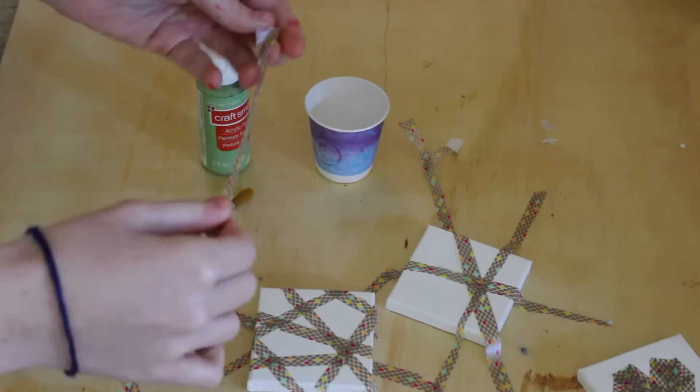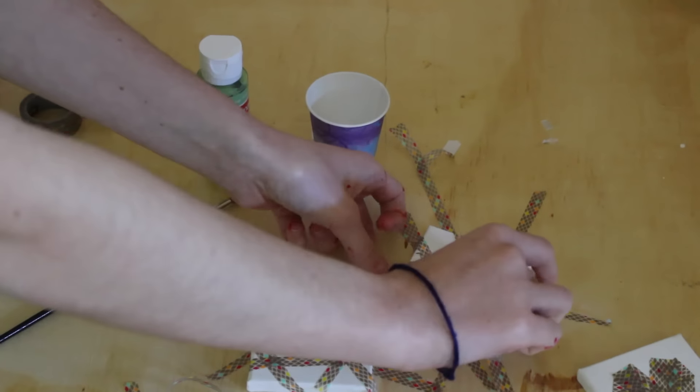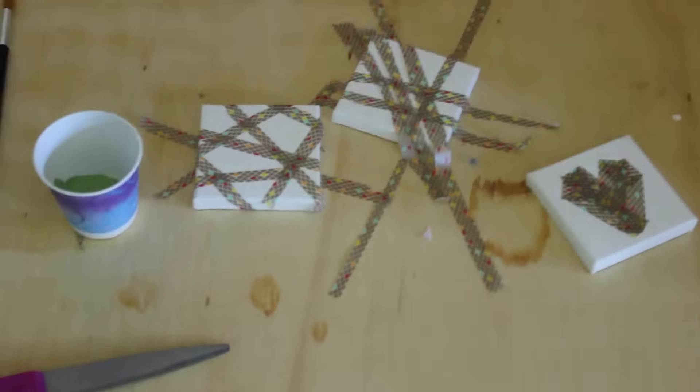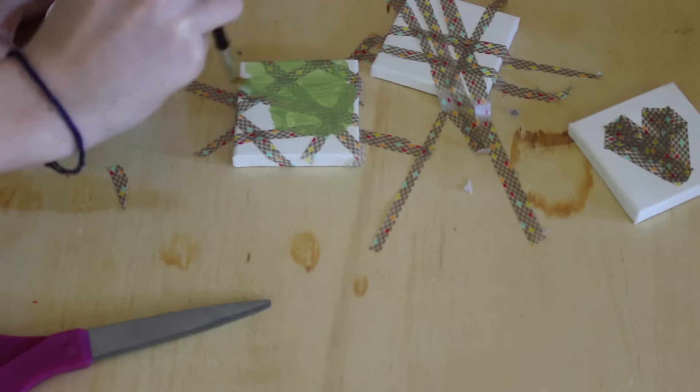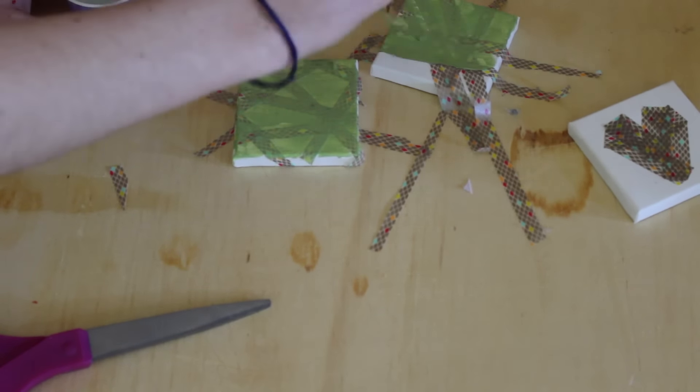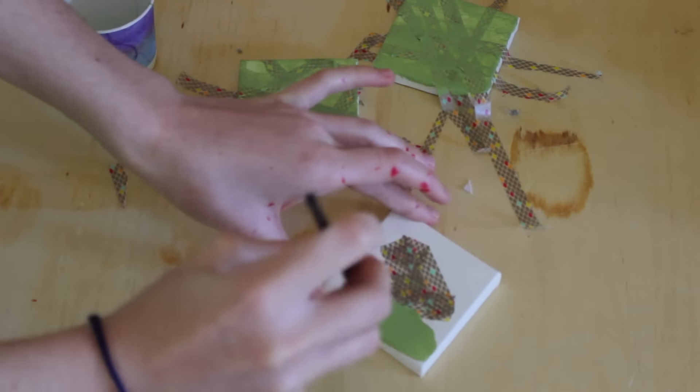I went for kind of an abstract design, but if you want to make something like a shape then you can do that. The third one that I did I actually made a heart with the washi tape. Once you have the shapes or design that you want with the tape, you're just going to paint over it with the color of paint that you chose to match the room.